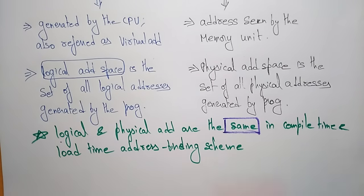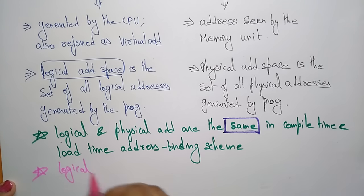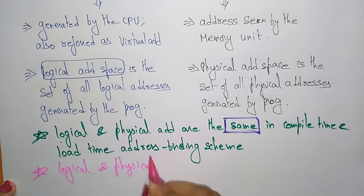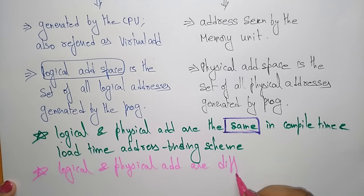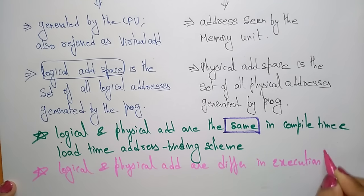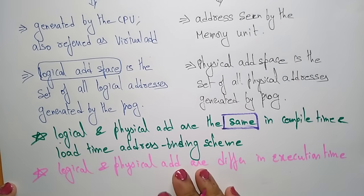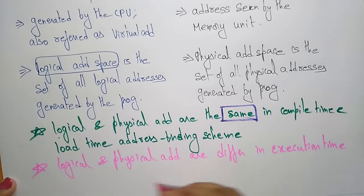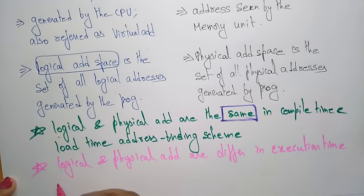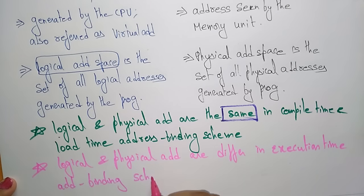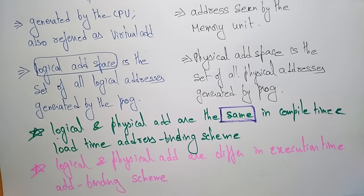However, the logical and physical addresses are different at execution time — in the execution time address binding scheme, the logical address and the physical address are both different. At the time of execution, the logical address and the physical address differ.